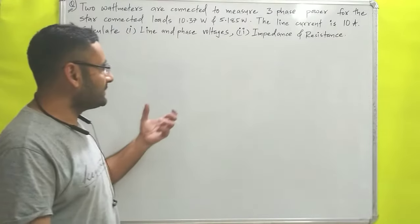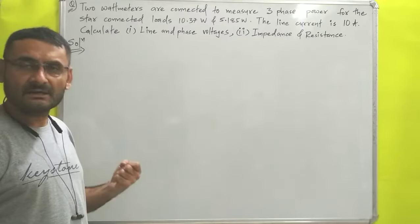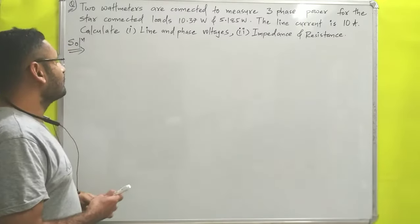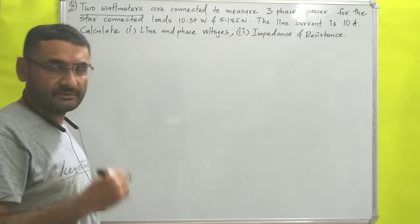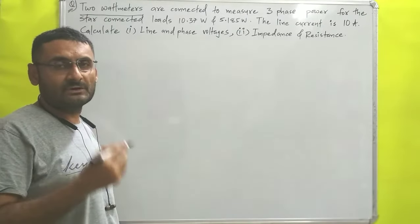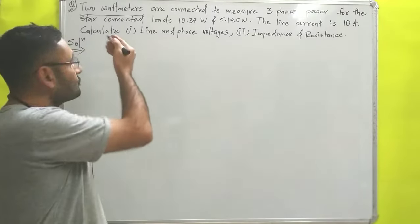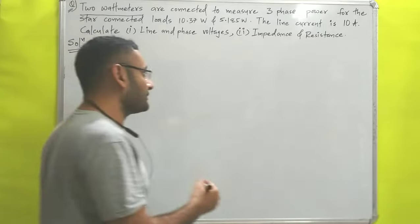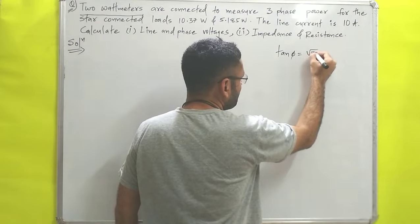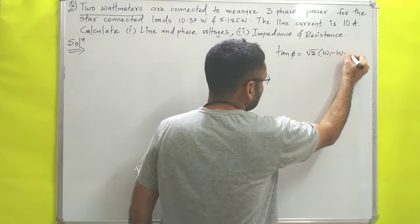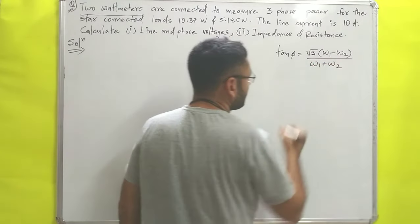Over here one numerical is written. First we will read the numerical and then collect the data. The first line states: 2 watt meters. In the previous video we discussed power measurement of a three-phase system using 2 watt meters, and we derived the important equation: tan φ = √3 × (W1 − W2) / (W1 + W2), if you remember.